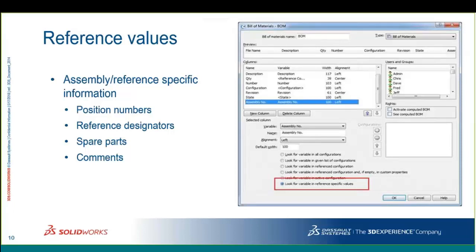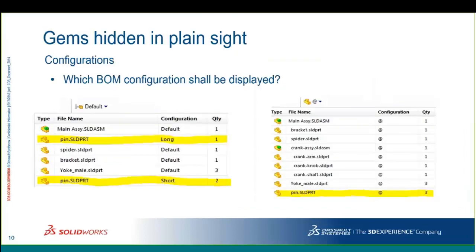Another interesting scenario: in my example assembly, I have the same file used twice — once in a long configuration and once in a short configuration. If you use configurations as unique parts, you'd probably choose the default configuration view. In the long configuration I have a quantity of one, and in the short configuration a quantity of two. If I use the "@" symbol view instead, now I can see the same part with a total quantity of three.